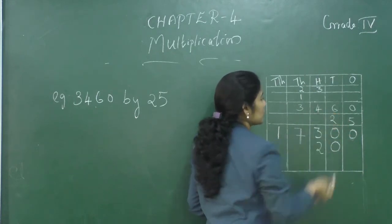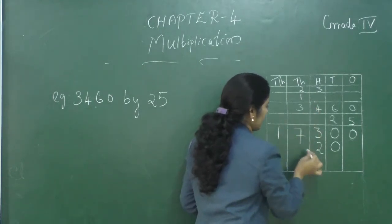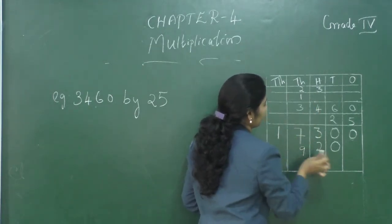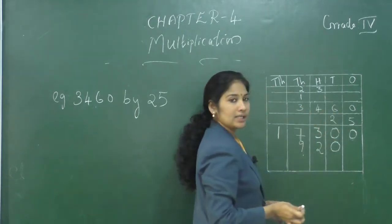Now, what is 2 into 4? 8. 8 plus 1? 9. Now, what is 2 into 3? 6.